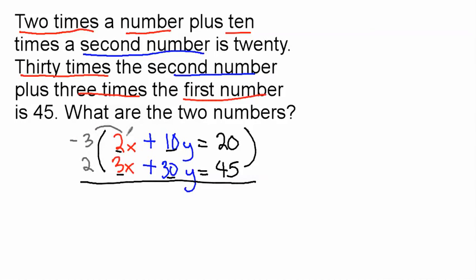So negative 3 times 2x is negative 6x. And then negative 3 times 10y is negative 30y. And then you have negative 3 times 20 equals negative 60.